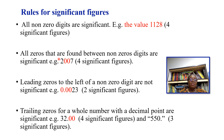For example, in 2007 we have two zeros. These zeros are found between non-zero digits — 2 is a non-zero digit and 7 is another non-zero digit — so these zeros are significant. Therefore, in 2007 we have four significant figures.